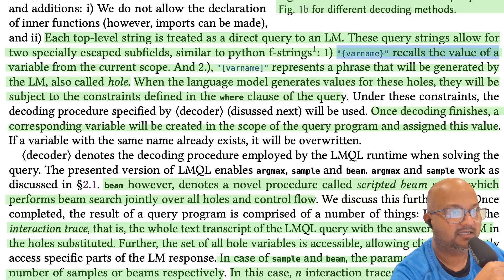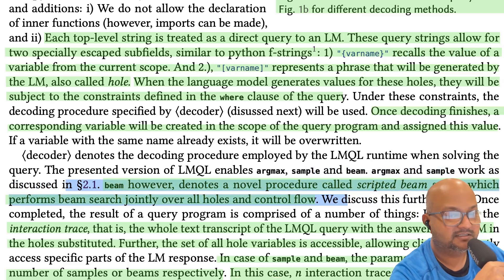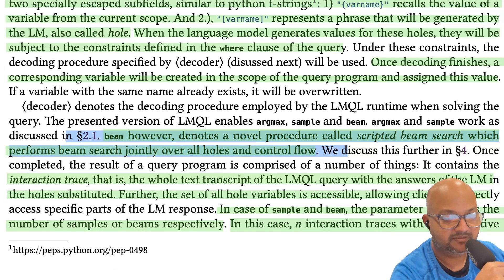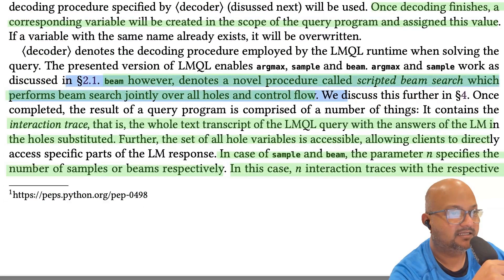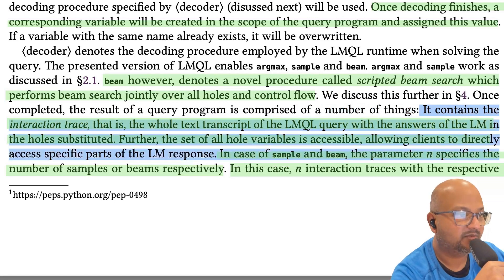If a variable is within curly brackets, that looks up the value of the variable and substitutes it at the given place in the prompt. When you use beam decoding, it performs a parallel search over the initial completions across the number of beams you want to search. At the end of running the prompt, the system gives you back an interaction trace — a raw transcript of all the queries and the back-and-forth with the language model.